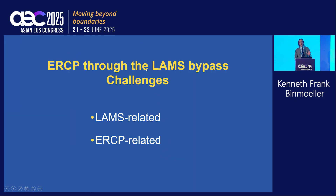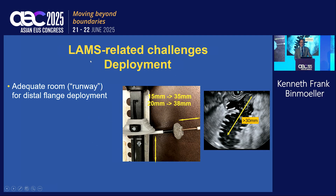There are two categories of challenges when performing ERCP through the LAMS bypass: first, LAMS-related, and second, ERCP-related. Starting with LAMS-related — the first is deployment. You need to have an adequate runway to safely deploy your distal flange in your target. We're usually using a 20-millimeter LAMS to accommodate our scope.